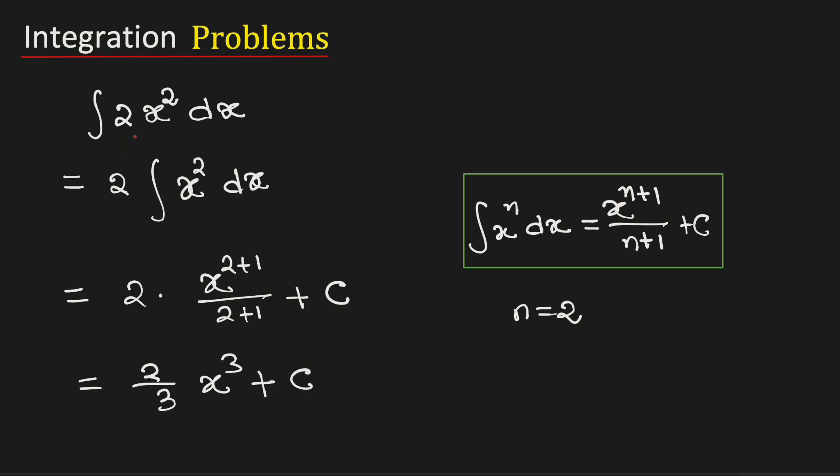Therefore, the integration of 2x square is equal to 2x cube by 3 plus integration constant C. And this is our final answer.